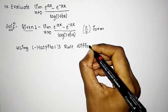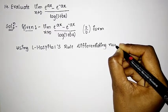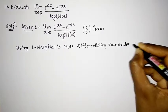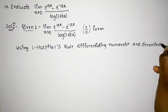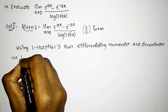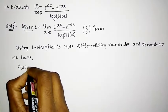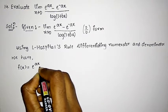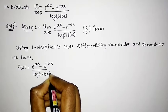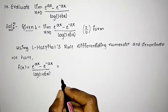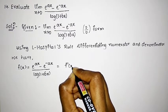Differentiating the numerator and denominator. We have f(x) equal to e raised to a into x minus e raised to minus a into x, whole divided by log of 1 plus bx. So first we shall apply differentiation to both numerator and denominator, so f dash of x equals: